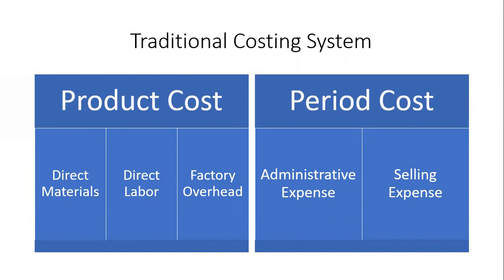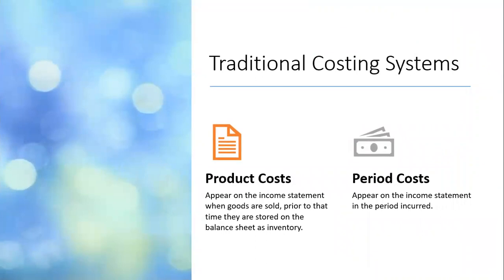Period costs are costs incurred for office and selling expenses, consisting of administrative expenses and selling expenses. Product costs appear in the income statement when goods are sold, since product cost is part of computing the cost of the product. Prior to that, they are stored in the balance sheet as inventory — finished goods, work in process, and raw materials. Period costs appear on the income statement in the period they are incurred, covering administration, distribution, and selling costs.